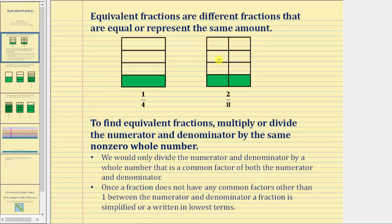Looking at these two models here, if we define the rectangle as one whole, this is the model for one-fourth, and this is the model for two-eighths. Notice how the fractions are different, but the same amount is shaded, and therefore one-fourth and two-eighths are equivalent fractions.